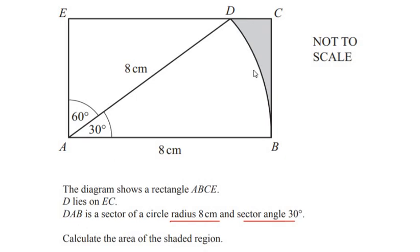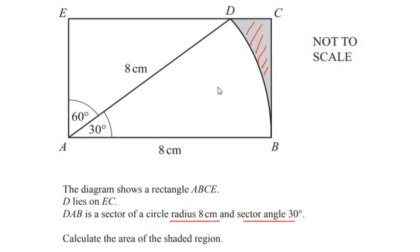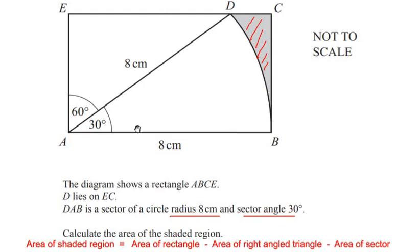Calculate the area of the shaded region. From close observation we can see that there are three shapes in the diagram: one is a right angle triangle EAD, another is a sector of a circle DAB, and another is a rectangle ABCE. To find the area of the shaded region we have to find the total area of the rectangle and subtract the area of the triangle and the area of the sector.